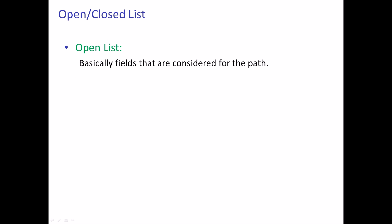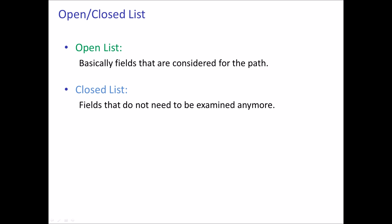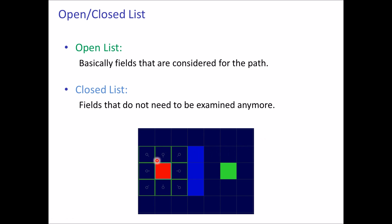So what is the open and closed list? The open list, which I'll always visualize in green, is basically all fields that are currently being considered for the path. The closed list, which I'll always visualize in blue, is fields that don't need to be examined anymore because we already examined them. After the first step, the starting field is added to the open list, then immediately taken from the open list and added to the closed list. Then all the neighbors are examined and added to the open list, and we also remember their parents — shown as an arrow pointing to the starting field.